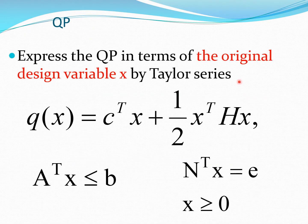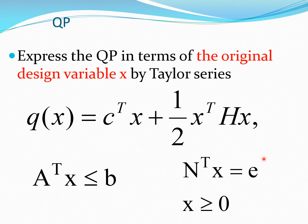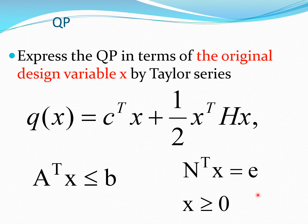We can generalize the QP using design variables X, where you get the usual form with a quadratic function Q of X. The first term involves the gradient vector C-transpose X, the second term involves the Hessian matrix H. Any constant does not play a part in the minimization process so we don't need to carry it. This function is minimized subject to two constraints, with coefficient matrices A and N, vectors B and E, and design variables greater than or equal to zero.